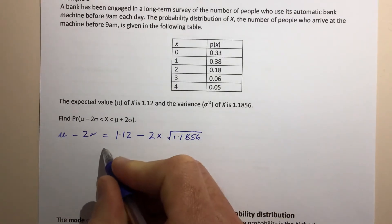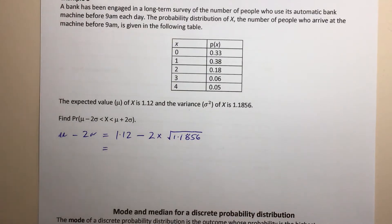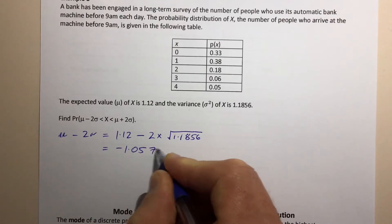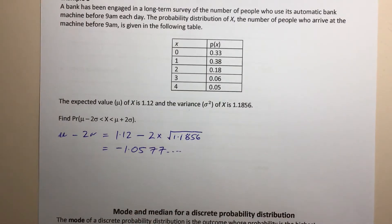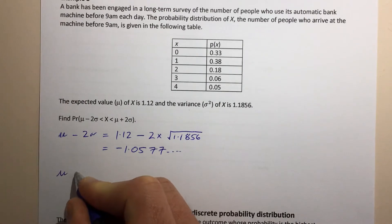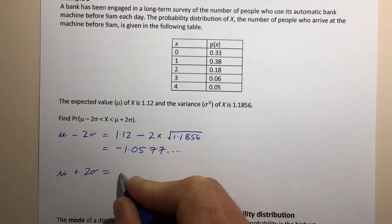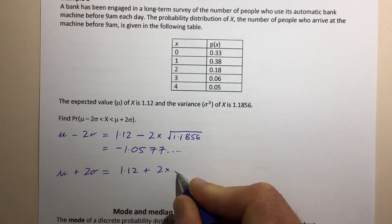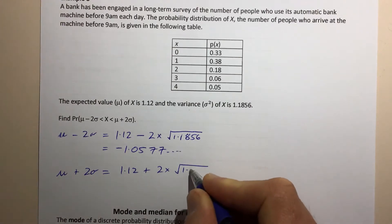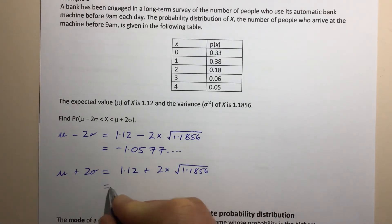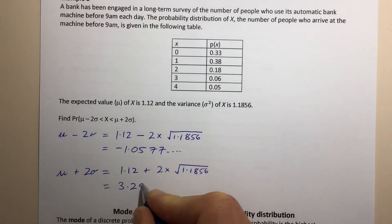Putting that into our calculator, we get negative 1.0577. That's the value two standard deviations below the mean. Then, to get the value two standard deviations above the mean, we do the mean plus two times the standard deviation: 1.12 plus two times the square root of 1.1856, which gives us 3.2977.